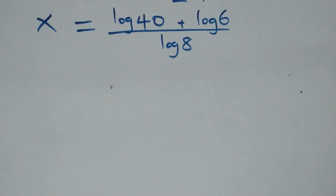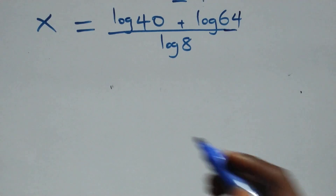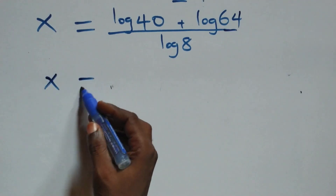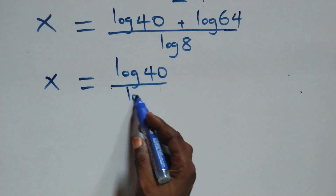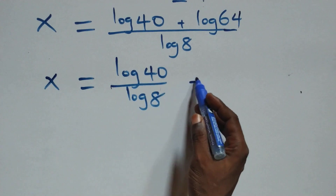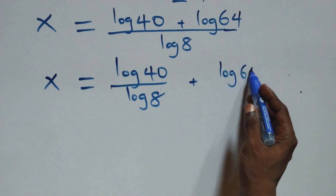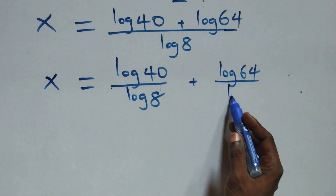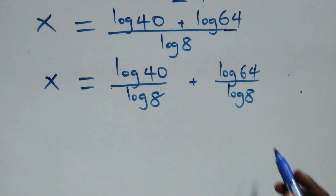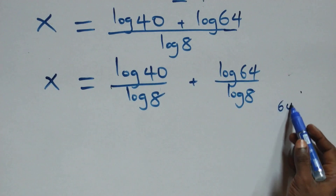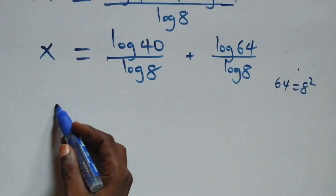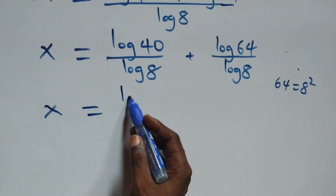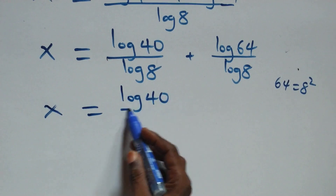Next, we separate this into two fractions: x equals log 40 over log 8 plus log 64 over log 8. Now 64 can be expressed as 8 squared, so all we have becomes x equals log 40 over log 8 plus log 8 squared over log 8.